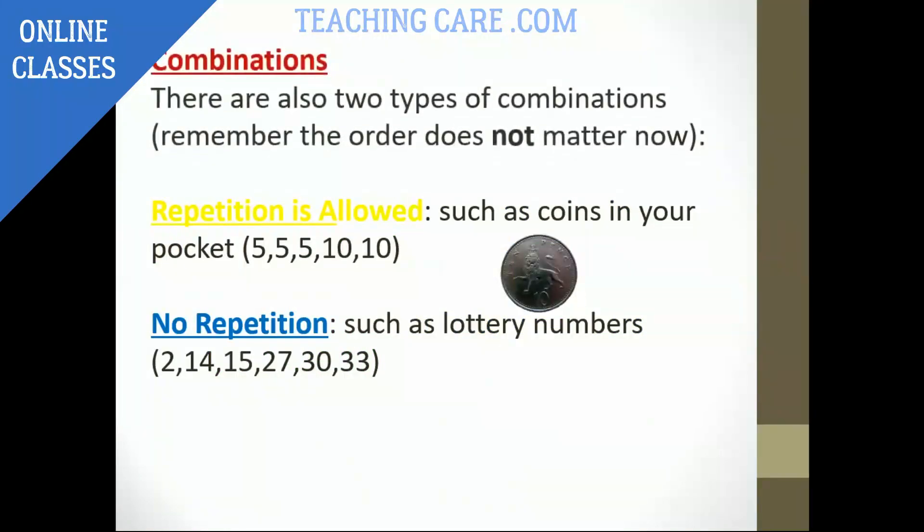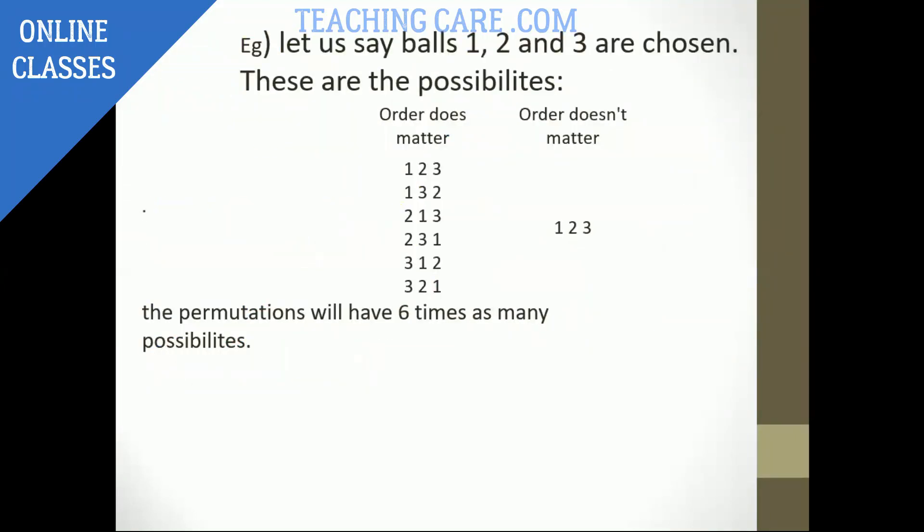So again, for a combination, there are two types in that. Repetition is allowed and no repetition is allowed. Order is not important here, but the condition. For example, they have taken a coin, such as coins in your pocket: 5, 5, 5, 10, 10. There is no repetition means like you can take lottery numbers like 2, 14, 15. Repetition will not be there, but order can be in it. So these are the two types of combinations you have.